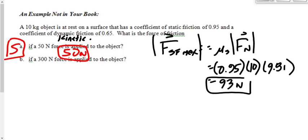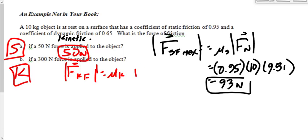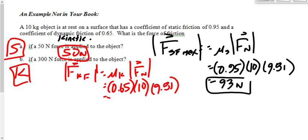If we push with a force of 300 newtons, does that beat static friction? Max static friction is 93. Does it move? Yes. So what kind of friction do we have? Dynamic or kinetic. So what's the force of friction? Let's find the force of kinetic friction: 0.65 times 10 times 9.81 — that's 63 newtons.